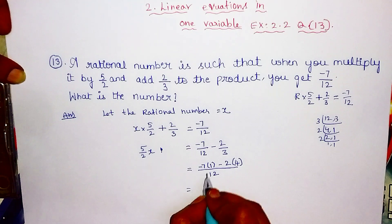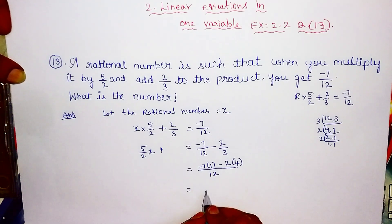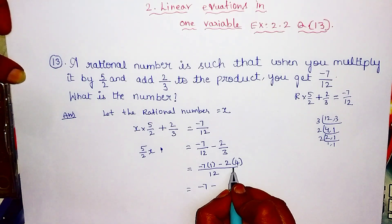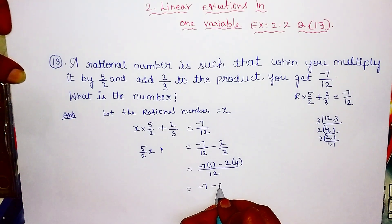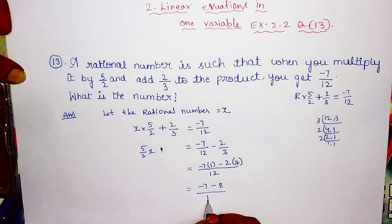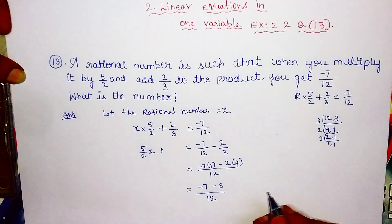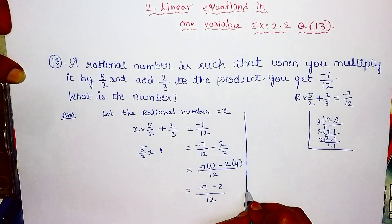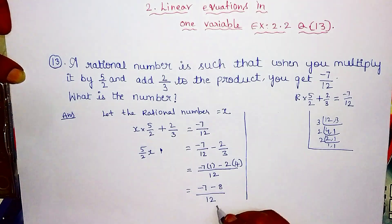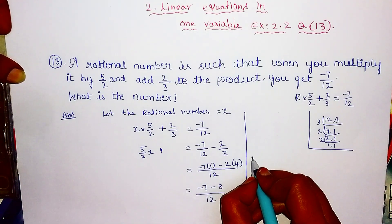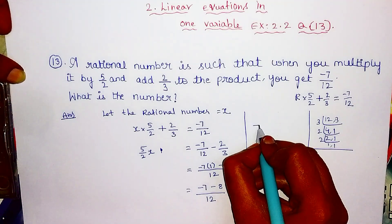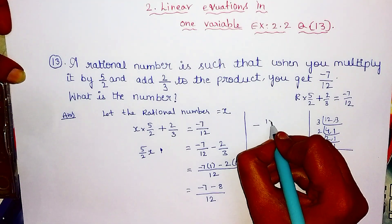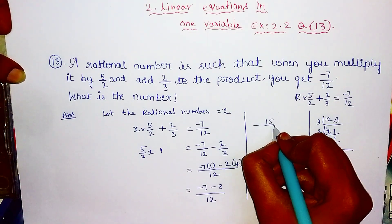That is equal to 7 into 1, but here is minus 7. Here is minus 8 by 12. Minus 7 and minus 8 are equal to minus 15. Minus 15 by 12.